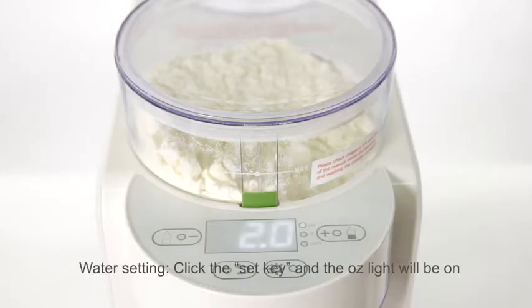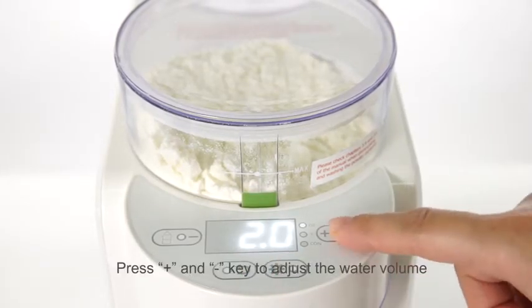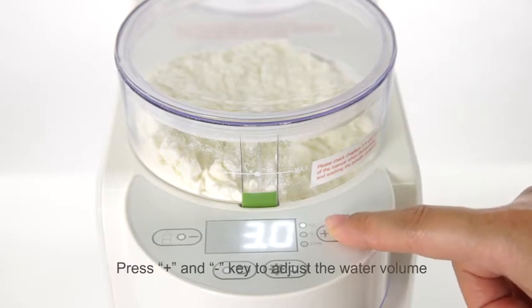Water setting: Click the set key and the ounce light will be on. Press plus and minus key to adjust the water volume.